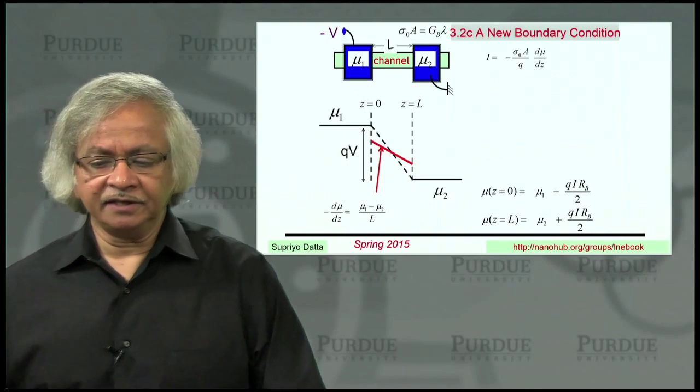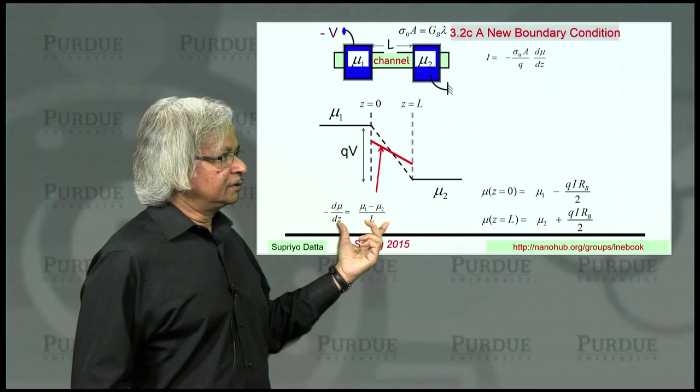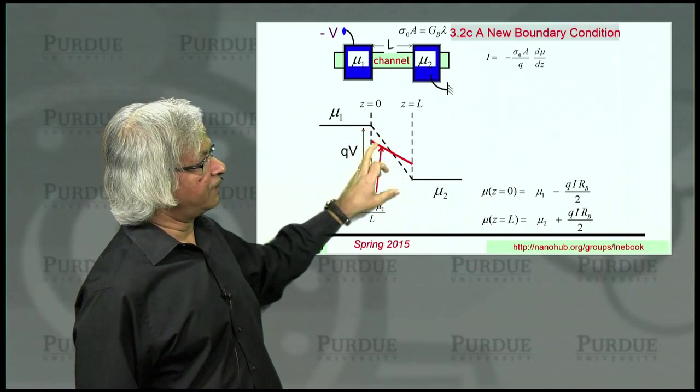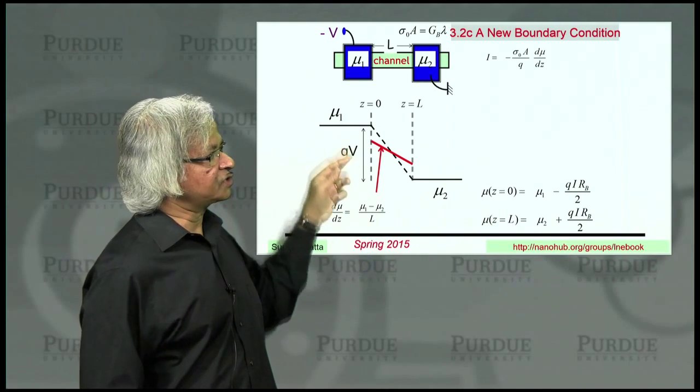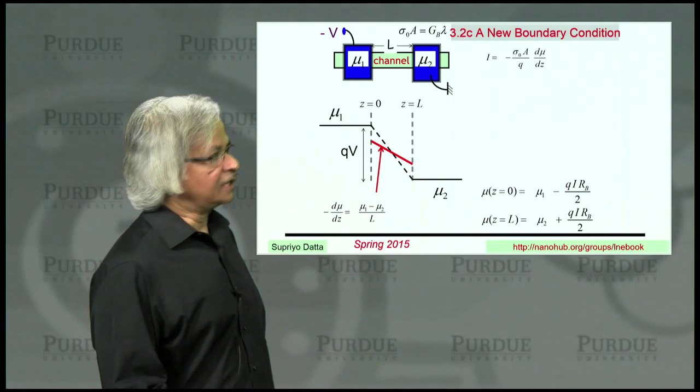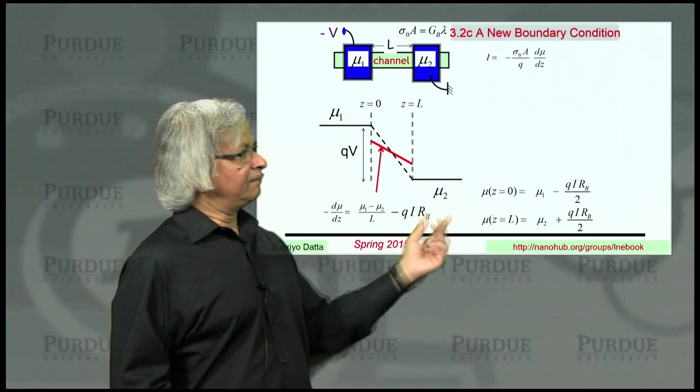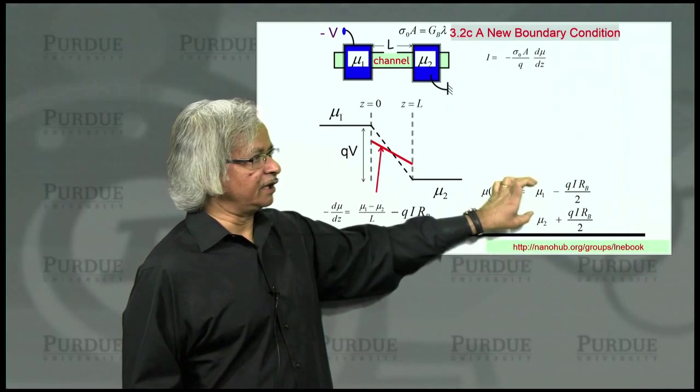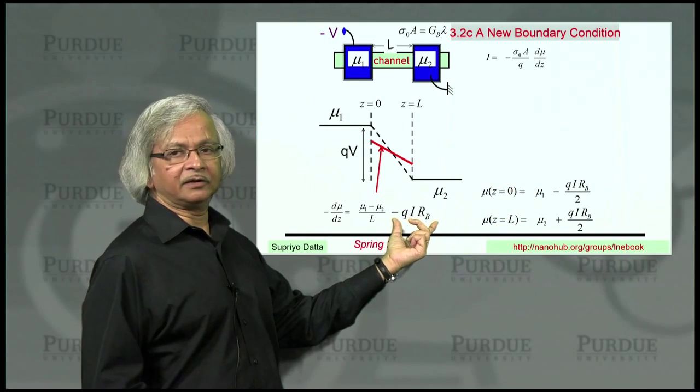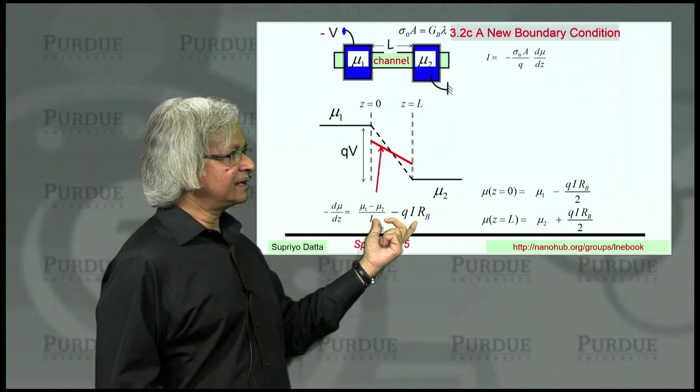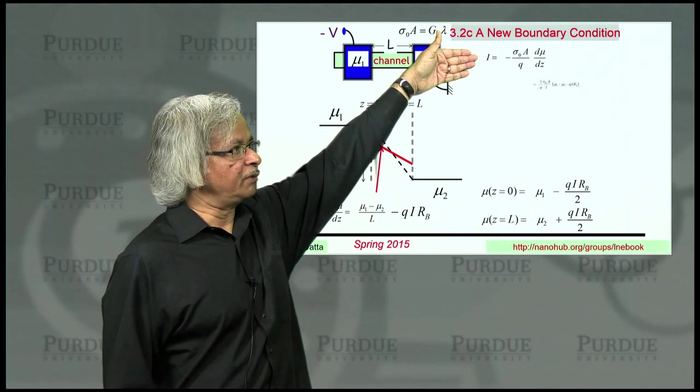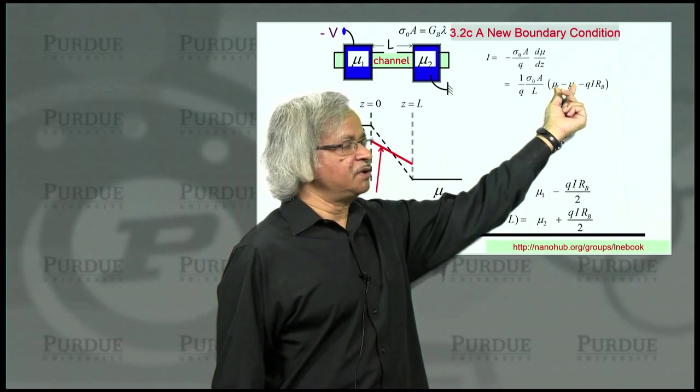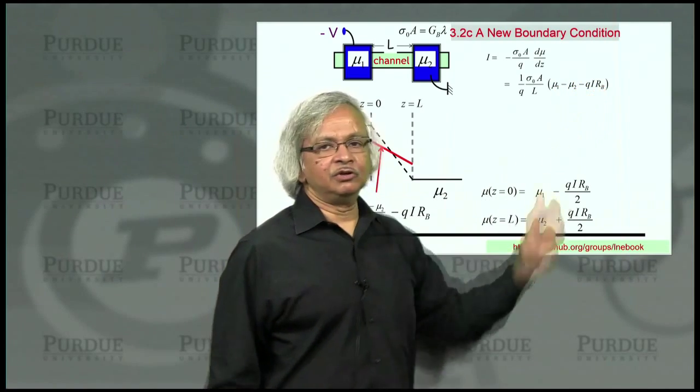That is if you now calculate the slope, again this minus d mu/dz. Previously we took mu 1 minus mu 2 and divided by L. That's what we had before. But now you see you start a little below mu 1 and end a little above mu 2. And so the slope is also a little less. How much less? Well, by q i r_b. Because mu 1 is less by half of that. Mu 2 is increased by half of that. So when I look at the difference, there is minus q i r_b that appears here. So what I can do next is take this and substitute it back into our current equation. So when I put that in, I get what I had before. But in addition, it's not just mu 1 minus mu 2, but mu 1 minus mu 2 minus this q i r_b, r_b being the ballistic resistance.